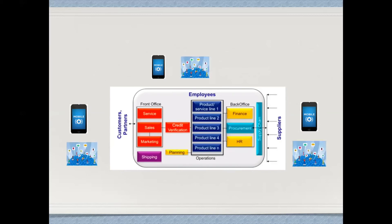Second is social. With social networks and social accounts that organizations maintain today, it is easy for them to gain access to front office and back office people and also collaborate with customers, suppliers, and partners. Third is cloud — as more and more applications move to the cloud, business applications can be easily accessed and integrated from anywhere.